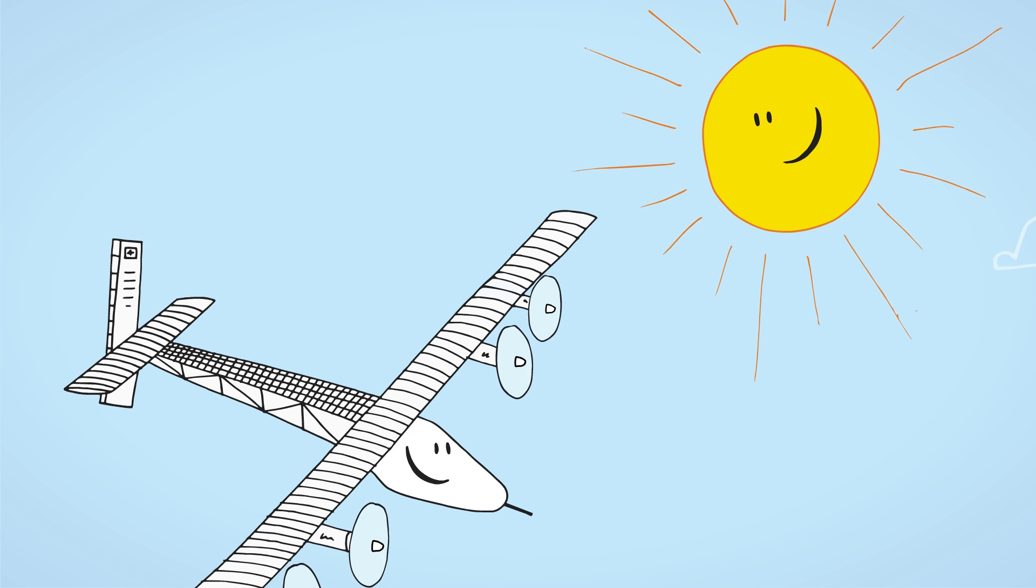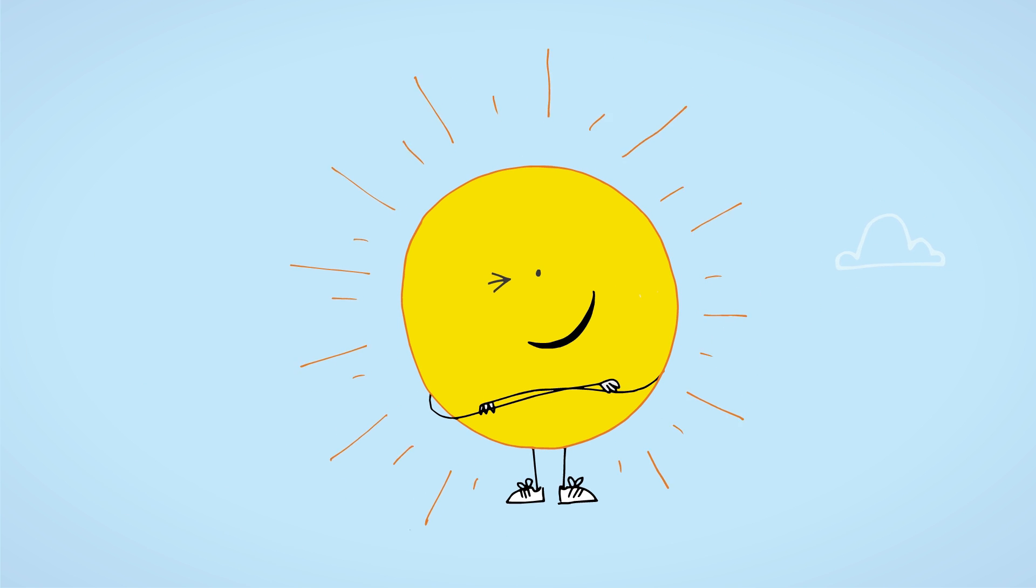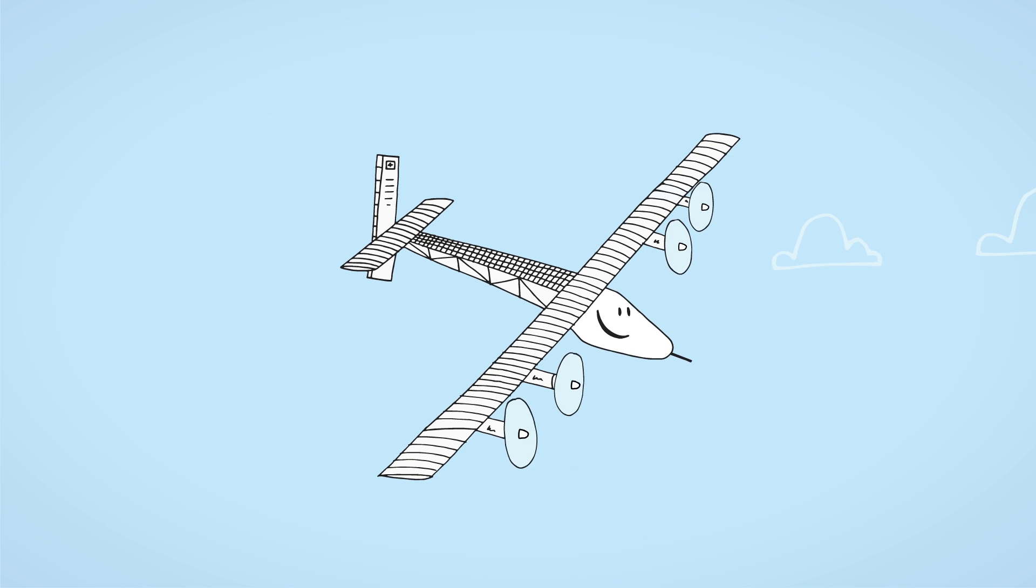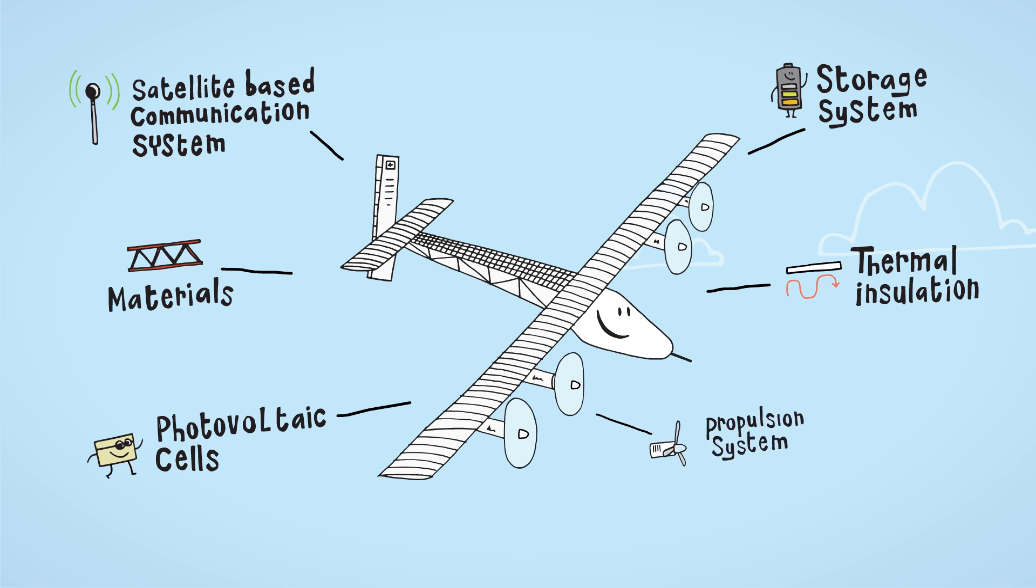Solar Impulse is a revolutionary airplane, getting all its energy from an unlimited source, the Sun. Every single part of this flying laboratory has been engineered by the technical team led by André and supported by a family of partners brought in by Bertrand.